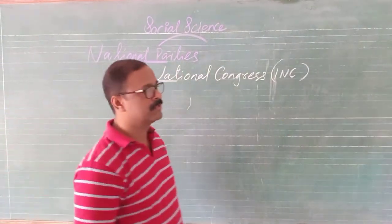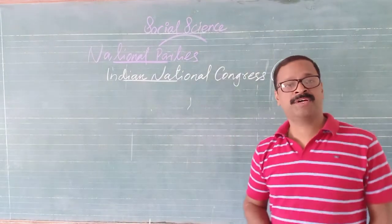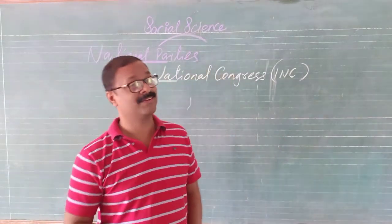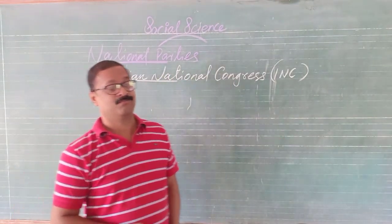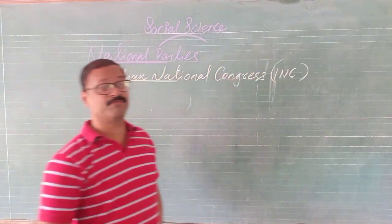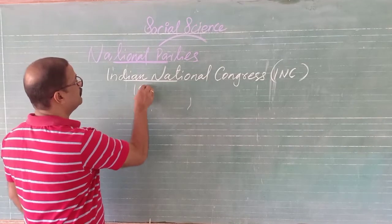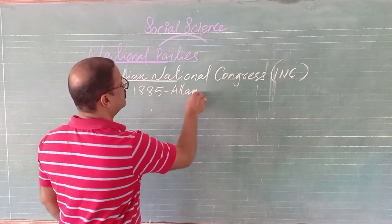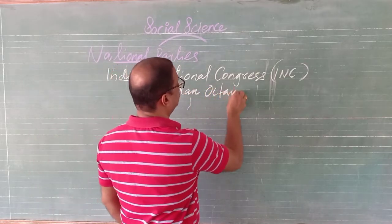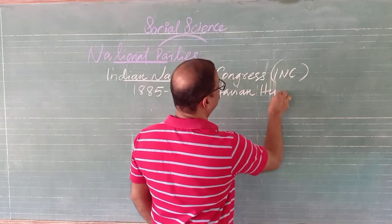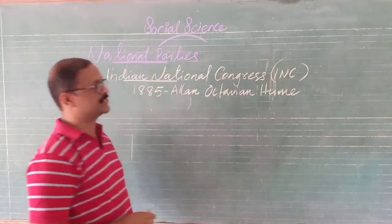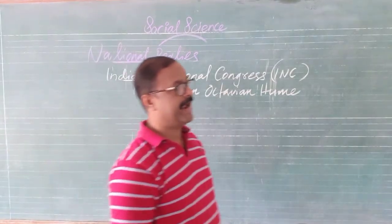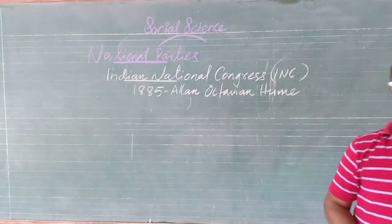The Congress party is one of the oldest parties in the world. This party was founded in the year 1885 by Allan Octavian Hume. He was a British man.